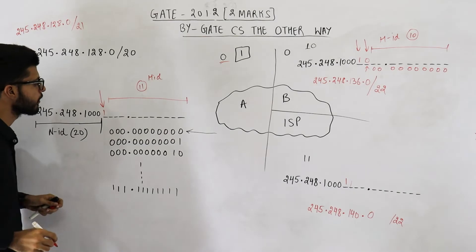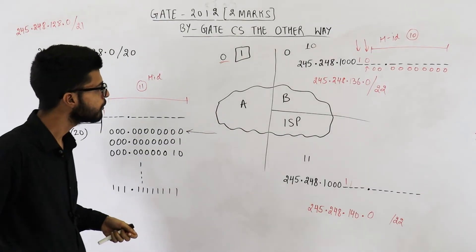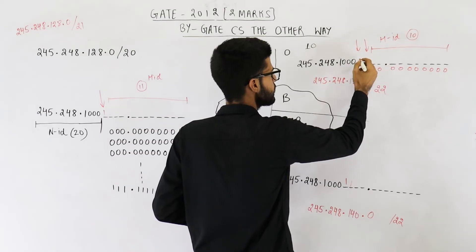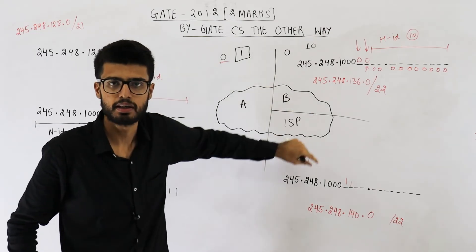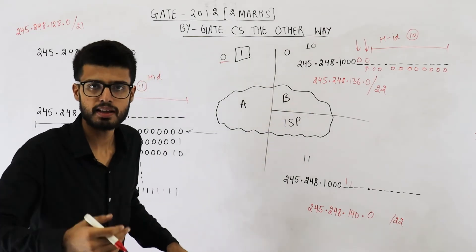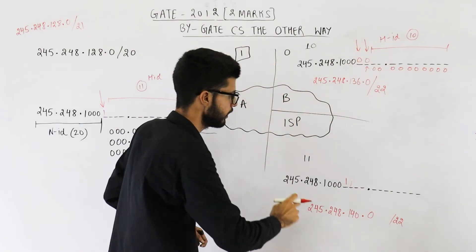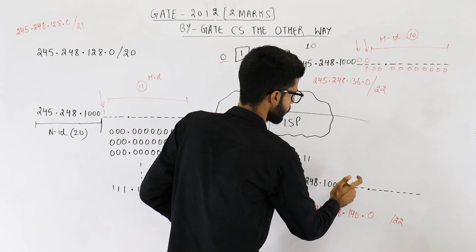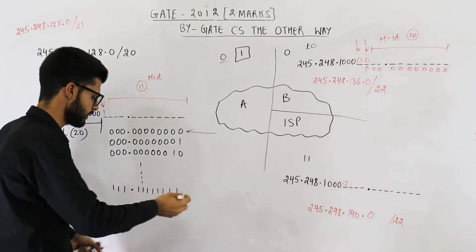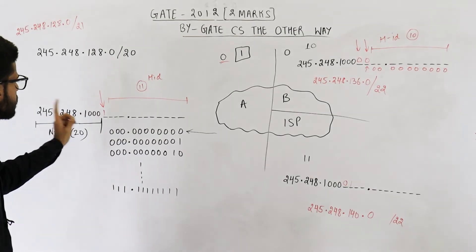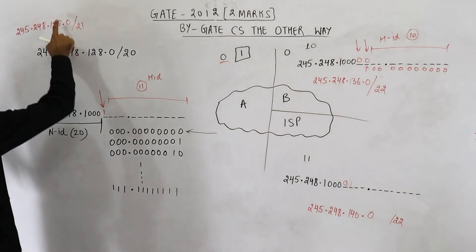If this bit is one, we say 11 bits are in the host ID and we are talking about network A. If this bit is zero, we analyze one more bit to determine which of the other two subnets it is. Now let's find the network addresses for this alternative allocation. For A's subnet: 245.248, and 128 plus 8 equals 136, so A gets 245.248.136.0/21.